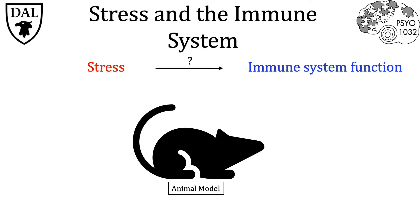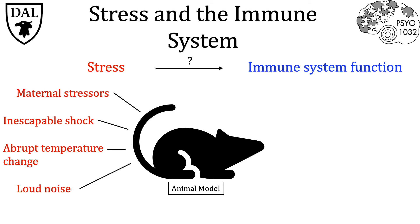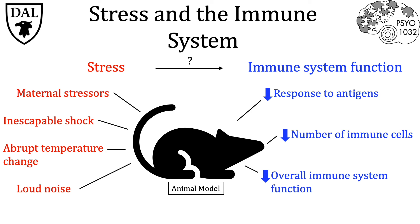Research from many animal studies has shown that both psychological and physical stressors have had effects on the immune system. These stressors on animals include maternal stressors, inescapable shock, abrupt temperature change, loud noise, and many more. What all these studies have shown is a reduction in response to antigens, a reduction in the number of immune cells present, and an overall decrease of immune system function.